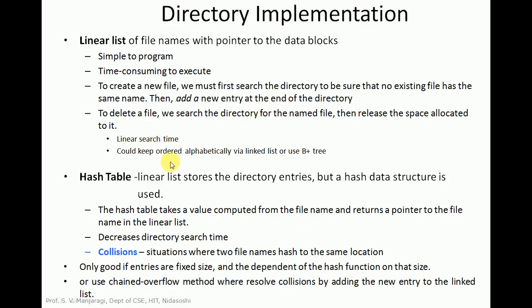Suppose you want to search for the nth node in the linear list — the time required will be n. So this has a linear search time. You can keep the files ordered alphabetically, and either use the linked list or use a B+ tree. Now let us move on to the next method of implementing a directory — that is hash table.